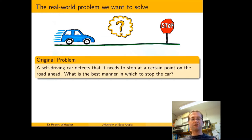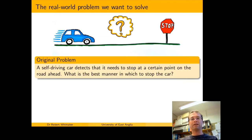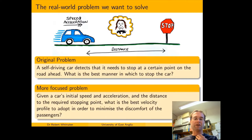As mathematicians we read that problem and weren't entirely sure what it meant. What do they mean by the best manner? What do we know about what the car is doing and where it needs to stop? So we went back to the vehicle manufacturer and had a chat to understand better what they actually wanted to know. After those conversations we came up with a more refined, more focused problem that more accurately described exactly what we knew and what we wanted to find out.